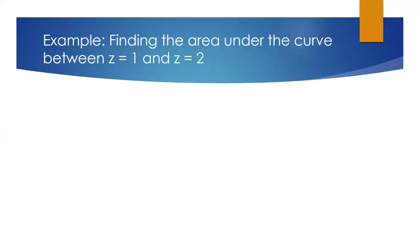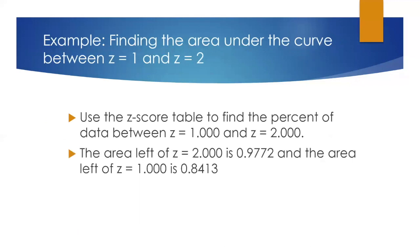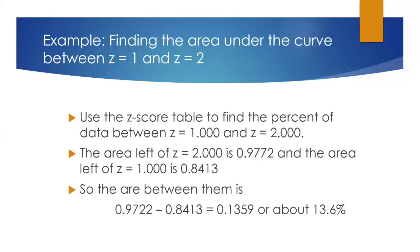For example, let's find the area under the curve between z=1 and z=2. We use a z-score table to find the percent of the data between these values. The area to the left of z=2 is 0.9772 and the area to the left of z=1 is 0.8413. So the area between them is the difference: 0.9772 minus 0.8413, which equals 0.1359 or about 13.6%.